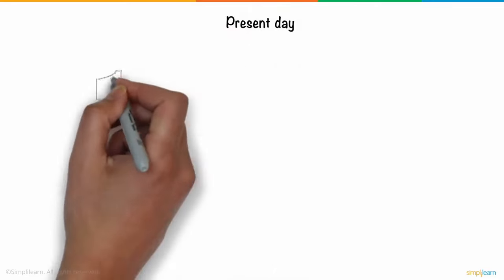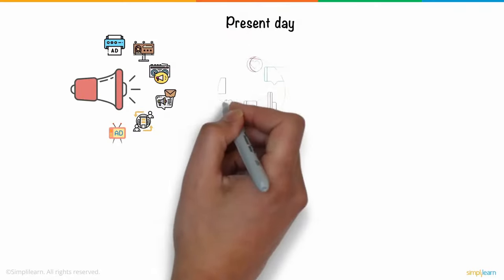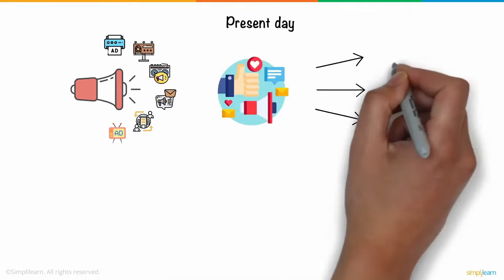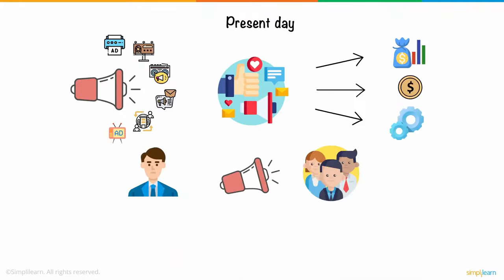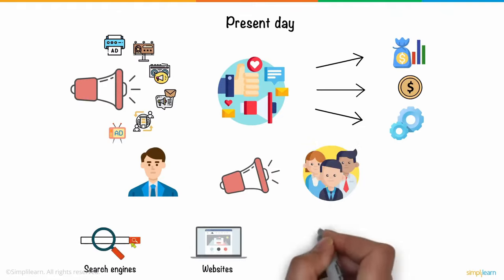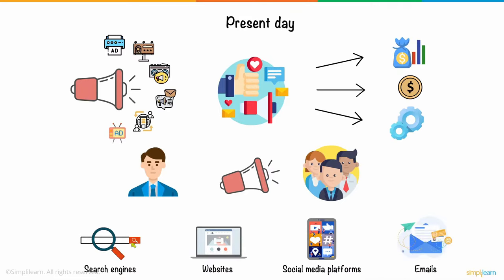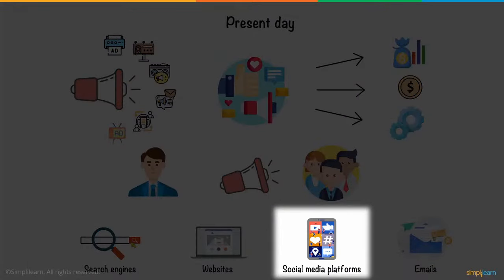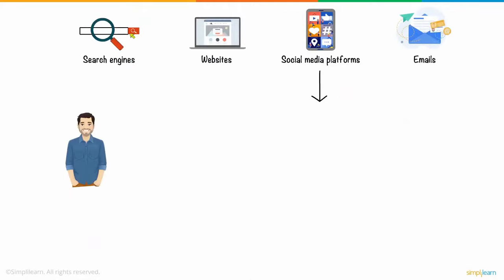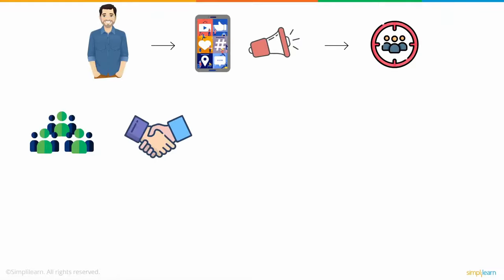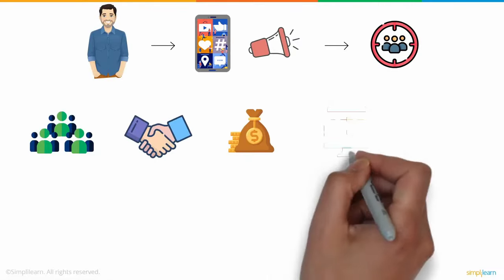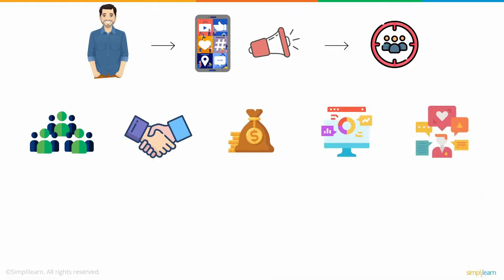Now let's look at the same scenario in the present day. Alongside traditional advertising, Phil would have access to digital marketing — a form of marketing that's more lucrative, inexpensive, and configurable. Among channels like search engines, websites, social media platforms, and email, social media marketing caught Phil's eye. It would give Phil the opportunity to advertise to a highly targeted audience, help more people learn about his book, increase interaction, and provide marketplace insights about his audience's preferences.